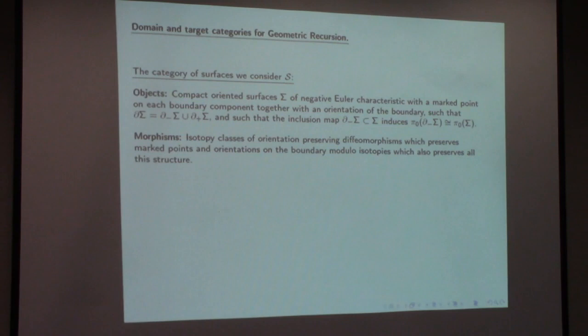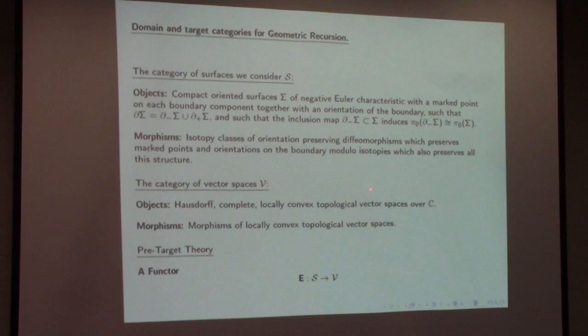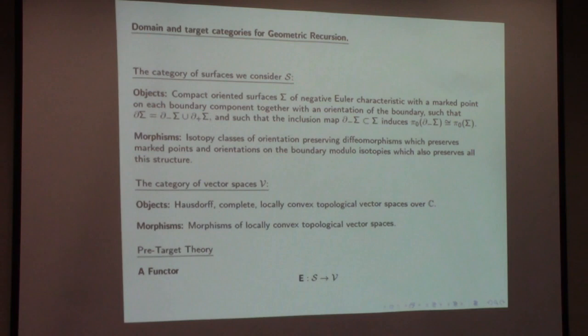The target theory takes values in Hausdorff, complete, locally convex topological vector spaces over the complex numbers. All of the examples I gave are exactly of this type — I mainly have infinite-dimensional vector spaces in mind. That's why I worry about the topology of the vector spaces. Fréchet spaces are examples of these. Morphisms are just morphisms of locally convex topological vector spaces. A pre-target theory is simply a functor from the category of surfaces to this category.